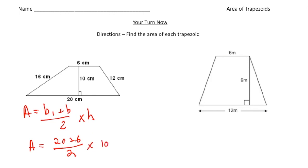So 20 plus six is 26 divided by two is 13 and 13 times 10 is 130. So the area of the first trapezoid is going to be 130 square centimeters. And there's the answer.